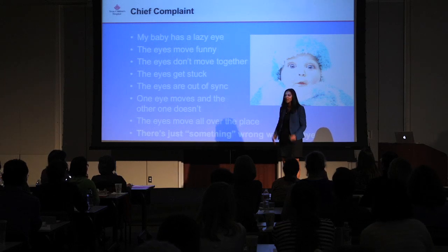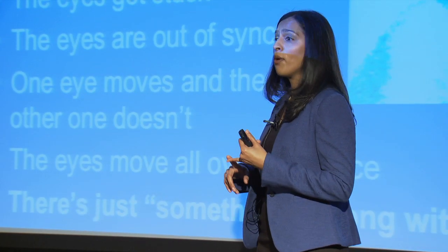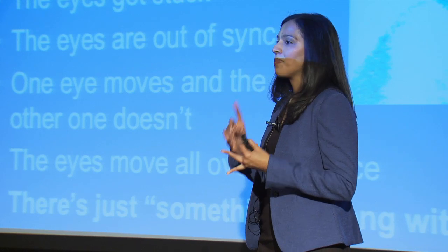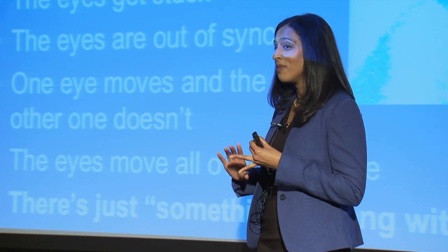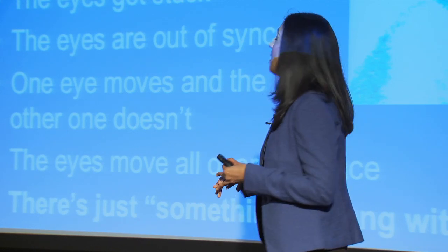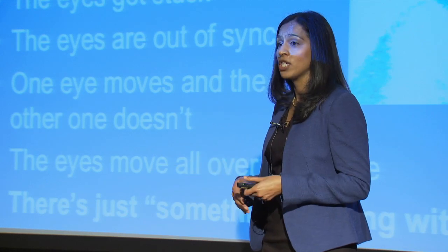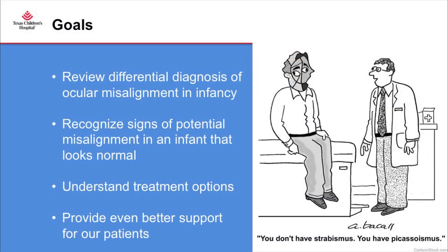The challenge is we have vague parental complaints in an age group that can be very difficult to examine, and oftentimes at first glance a child who looks normal. So what do we do? The goals of this talk are to review the differential diagnosis of ocular misalignment in infancy, recognize signs of potential misalignment in an infant that looks normal, understand treatment options, and provide even better support for our patients.